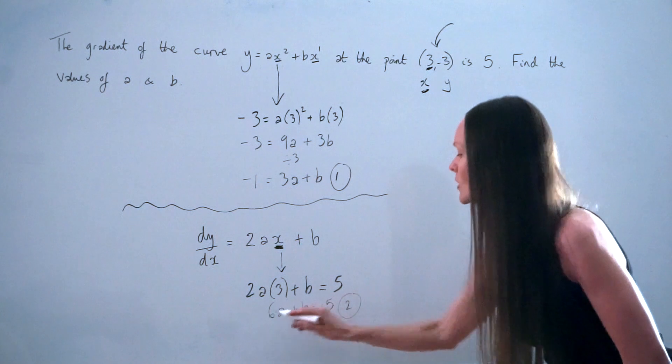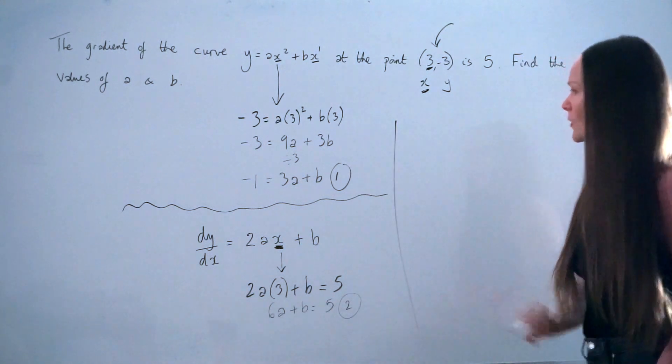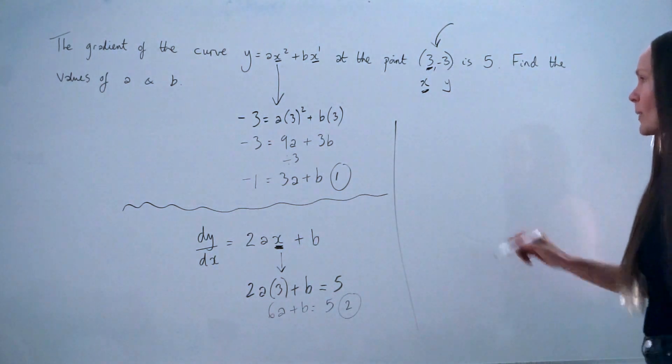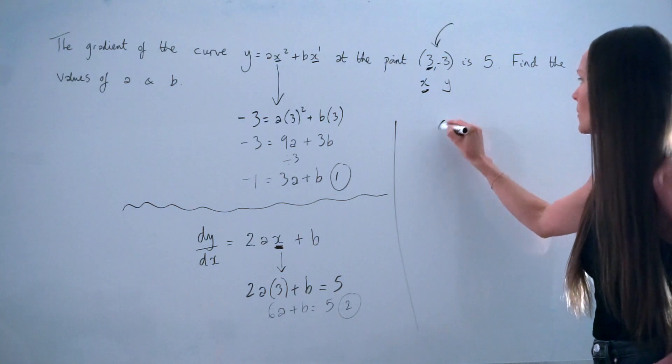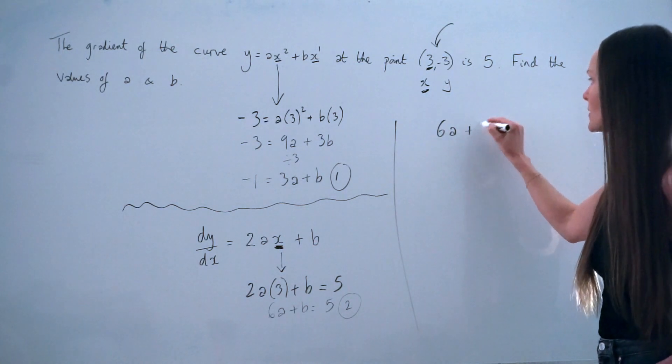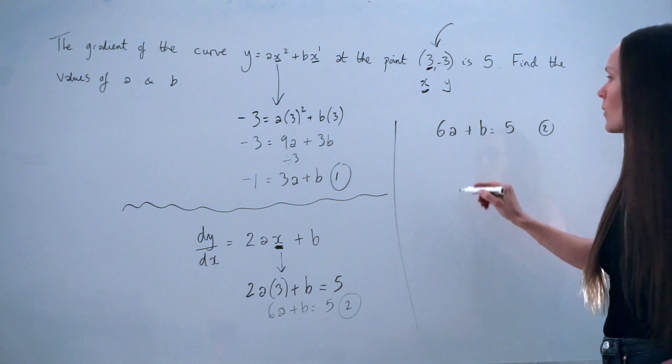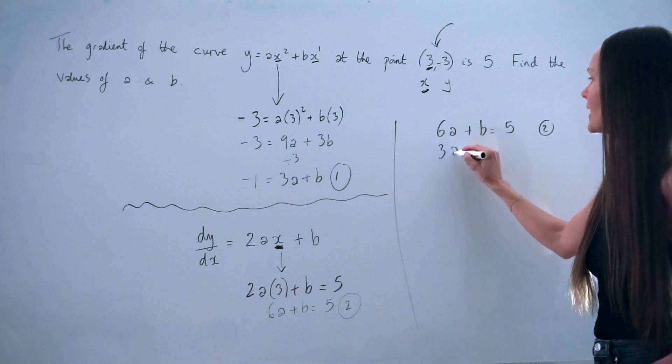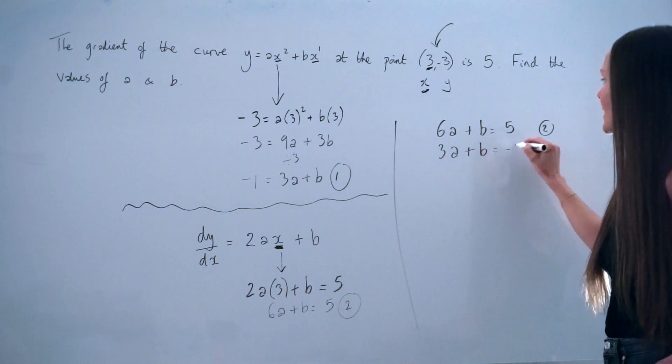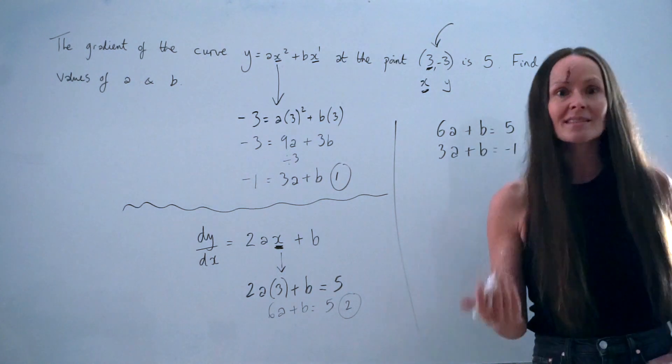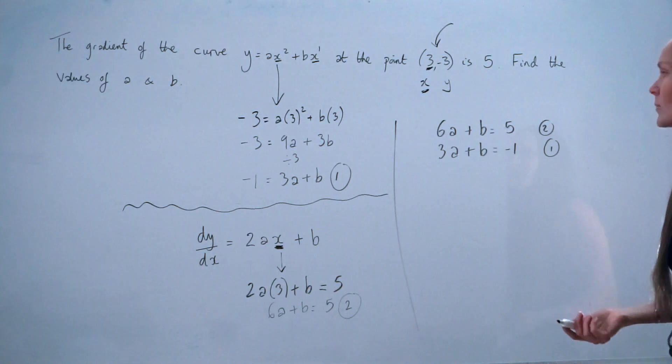So that is our second equation with a and b. I'm just going to rewrite those two equations up here. So I've got equation 2, 6a plus b equals 5. And equation 1 is 3a plus b equals negative 1. So I'm just solving the simultaneous equations to find a and b.